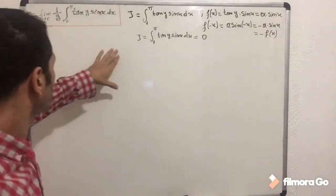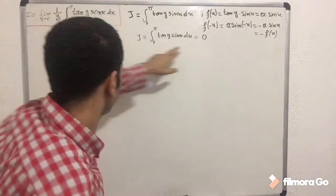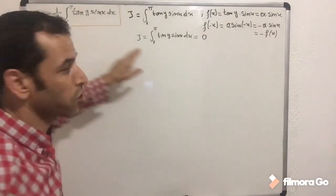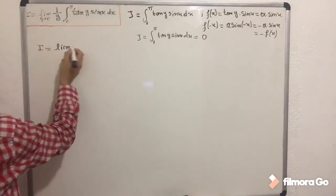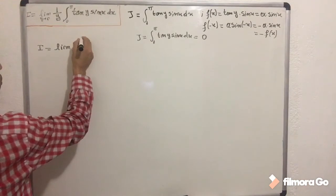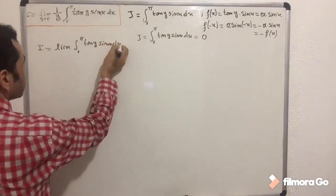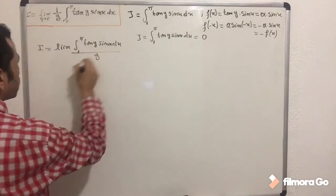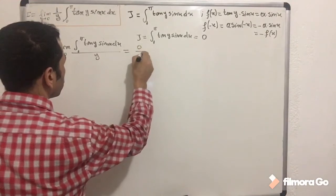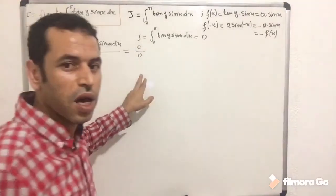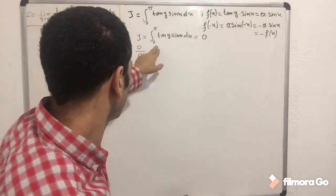So what does this mean when we apply our limit? We have two functions: zero multiplied by 1 over y, which means we have zero over y — that is, the limit of the integral from 0 to π of tangent(y)·sin(x) dx, all over y, as y approaches zero. This gives us the indeterminate form 0 over 0.